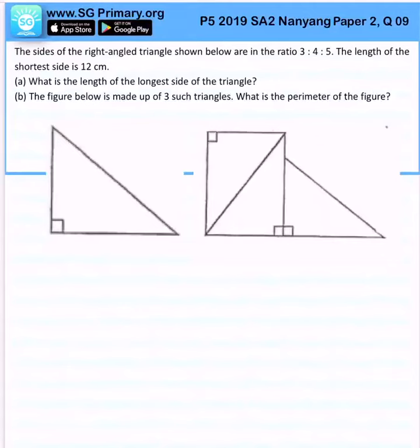The sides of the right-angled triangle shown below are in the ratio 3:4:5. The length of the shortest side is 12 cm. So what is the length of the longest side of the triangle?